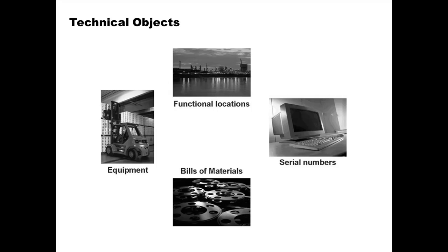The third kind of technical object is a functional location, which identifies a place — a place where equipment is installed. As opposed to talking about the equipment itself, a functional location identifies where an equipment is installed. For example, you might say repairs are required on a pump located in a particular part of the plant — that's what a functional location is.